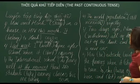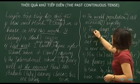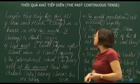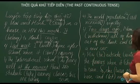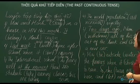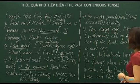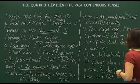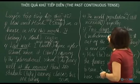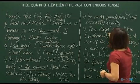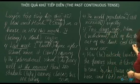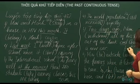Sentence 5: 'Today' — a past time clue here. 'Nam withdrew all of his money out of the bank and bought...' — with 'and', if the first verb is simple past, the second is also simple past. 'Withdraw' becomes 'withdrew', and 'buy' — irregular verb — becomes 'bought.'